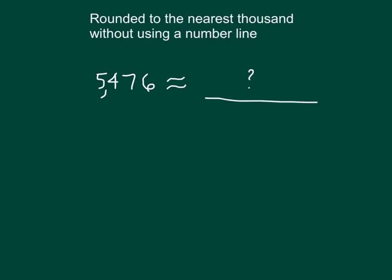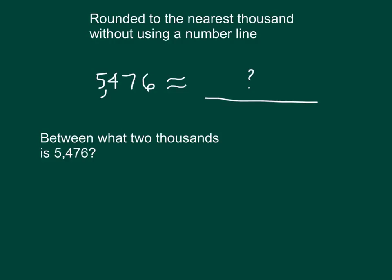Here, we are asked to round 5,476. We're rounding this to the nearest thousand without using a number line. The first question that we ask is: between what two thousands is 5,476? It is in between 5,000 and 6,000.